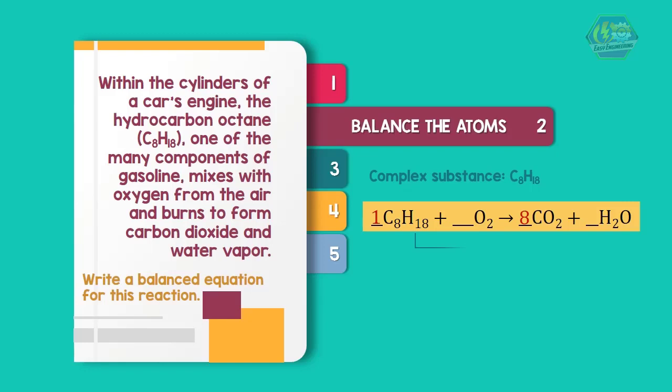There are now 25 atoms of O on the right: 16 in 8 CO2 plus 9 in 9 H2O. So we place the coefficient 25 over 2 in front of O2. Now step 3: Adjust the coefficients. We need to multiply by 2 to obtain whole number coefficients.